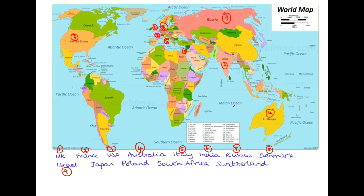Japan — can you spot Japan on the map? If you can find the big country, that's China, and if you go east of China — that's to the right — then you will see Japan. Japan is going to be number ten, and remember in Japan they use yen.